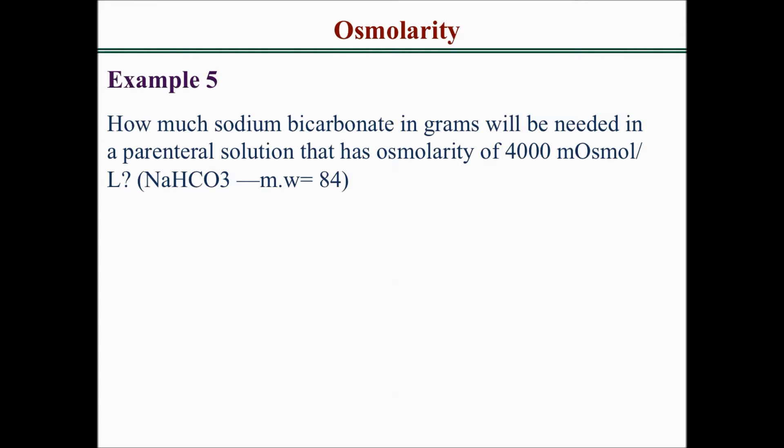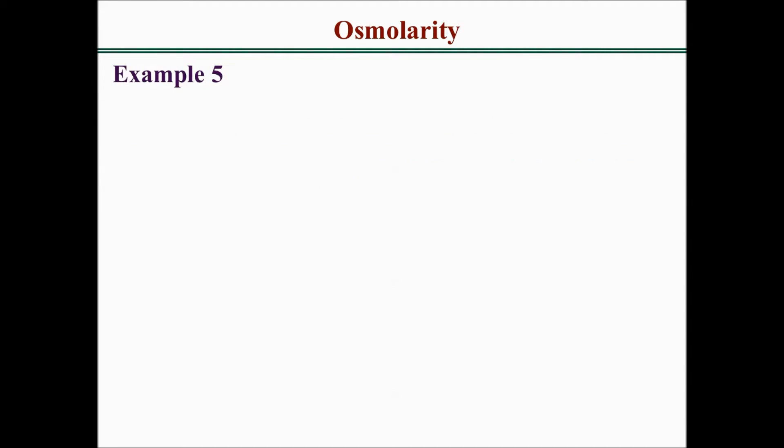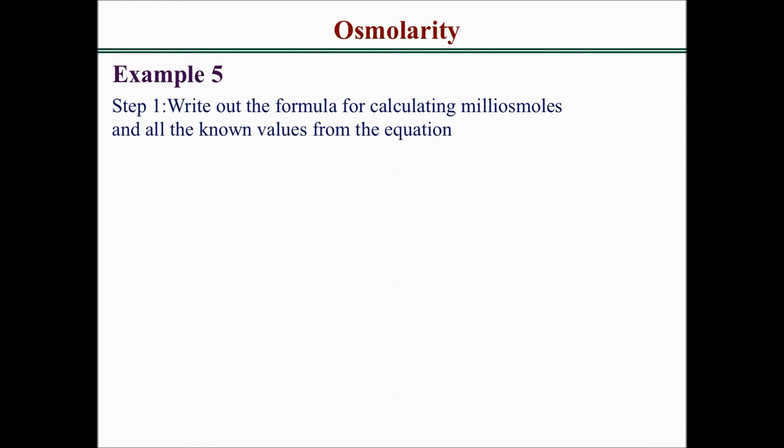This question asks us to solve how much sodium bicarbonate in grams will provide an osmolarity of 4,000 milliosmol per liter, given the molecular weight. Step 1 is to write out the formula for calculating milliosmol and all the known values. The formula is: milliosmol equals mass in grams divided by molecular weight in grams per mole, times number of particles, times 1,000.